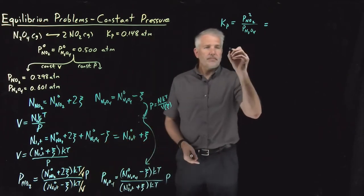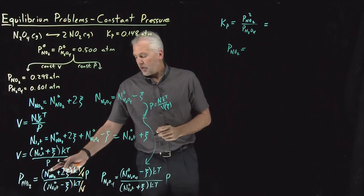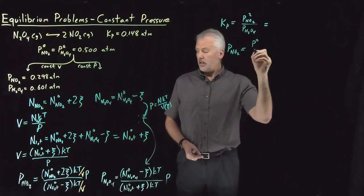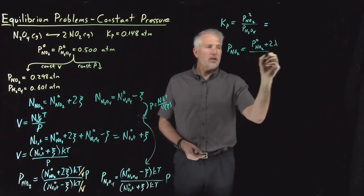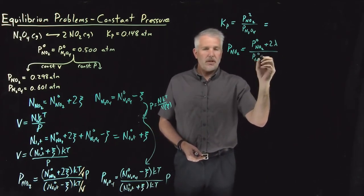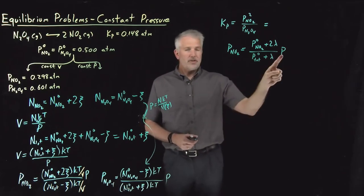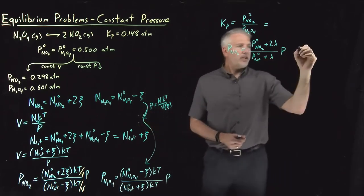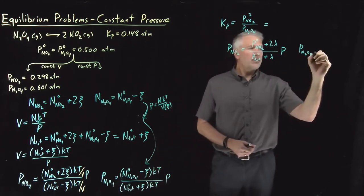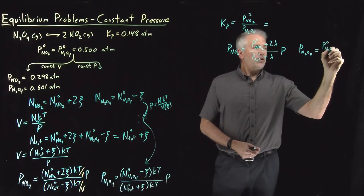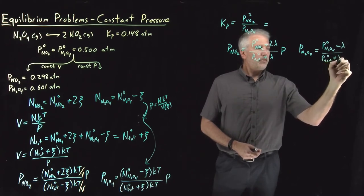The result of doing that: KT over V turns the molecule quantities into pressure quantities, giving P0_NO2 plus 2λ — where λ is the extent of reaction in units of pressure — over P_total initial plus λ, and then times the total pressure outside the fraction. Likewise, P_N2O4 is the initial pressure of N2O4 minus λ, over total pressure initial plus λ, all times pressure.